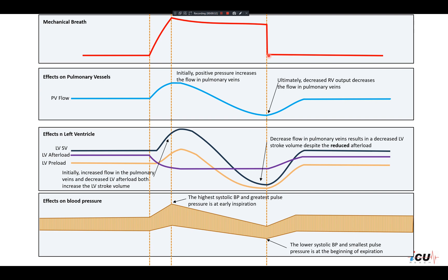At the beginning of expiration, the pressure goes back to the baseline. The second graph shows the effects of positive intrathoracic pressure on pulmonary vessels. This curve represents pulmonary vein flow. With initiation of inspiration and the positive pressure inside the chest, flow goes up as a result of the squeezing effect on the pulmonary veins. Then it starts to go down gradually due to decreased right ventricular output. It will take at least two to three heartbeats to reach the left side, possibly extending into expiration depending on flow through the pulmonary vessels.